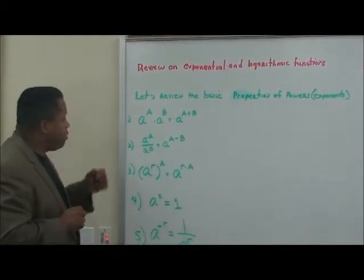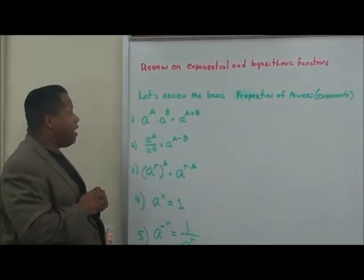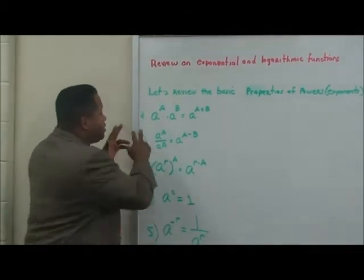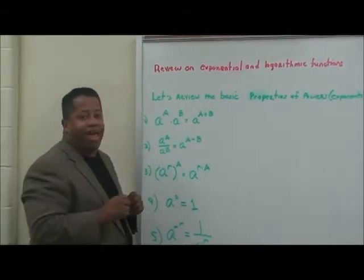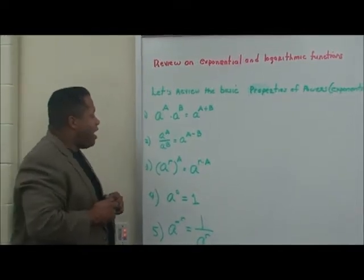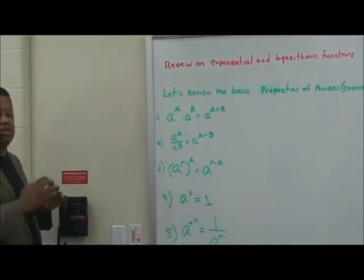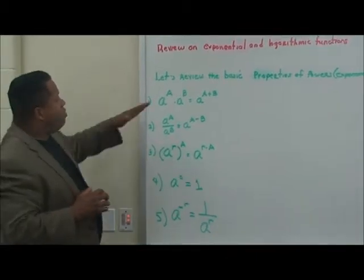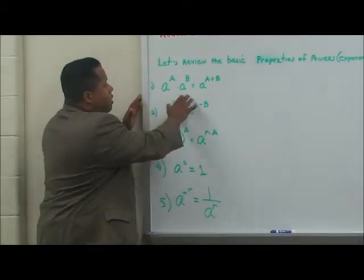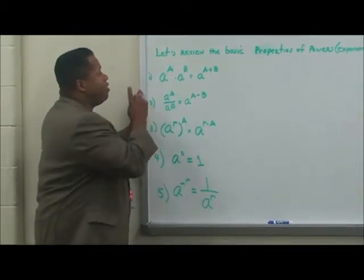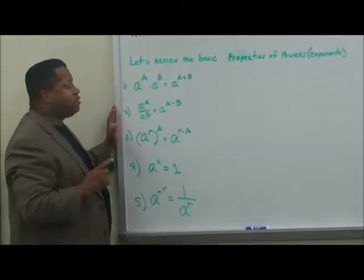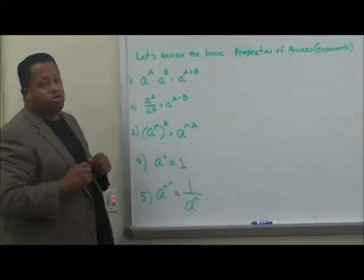Let's start with A to the A times A to the B, which has two bases that are the same. You're going to add the exponents. Whenever you're finding the product of powers and the bases are the same, you always want to add the exponents. When you have A to the A divided by A to the B — division — you're going to subtract the exponents. When dividing powers with the same base, you subtract the exponents.